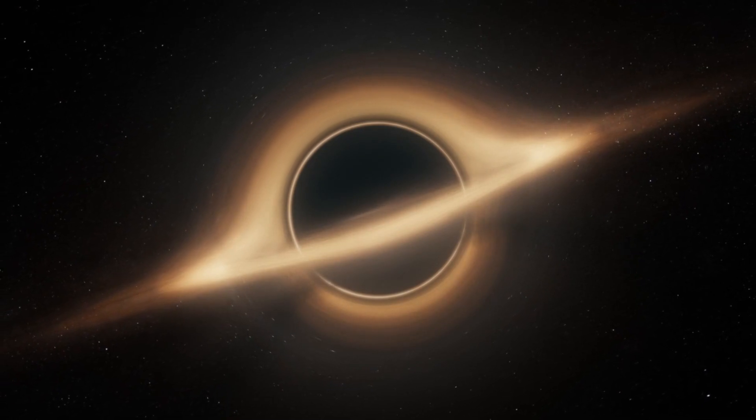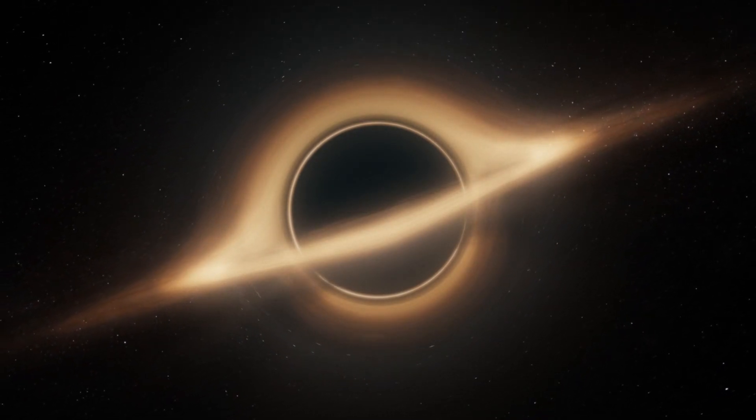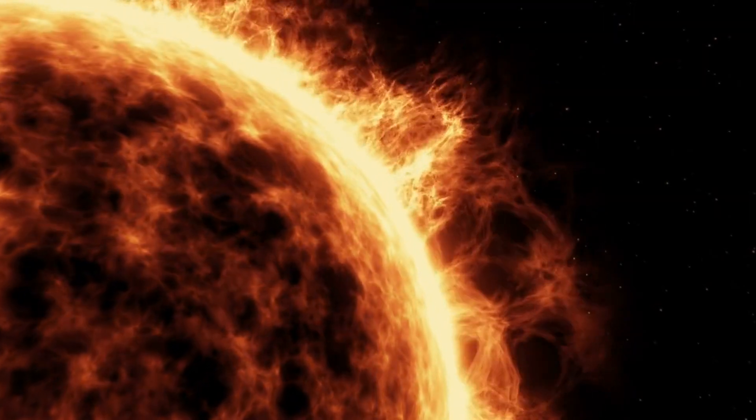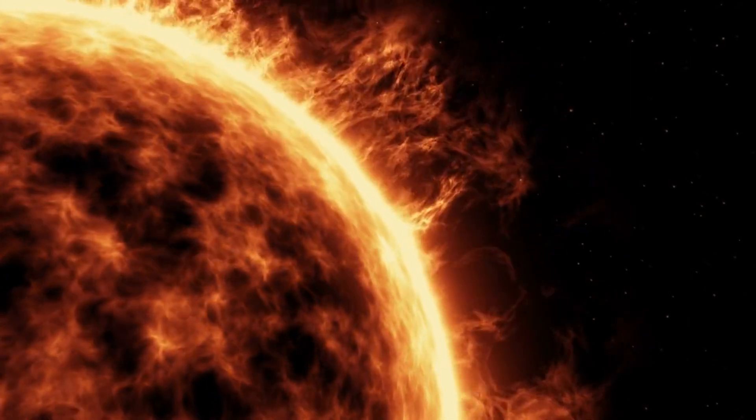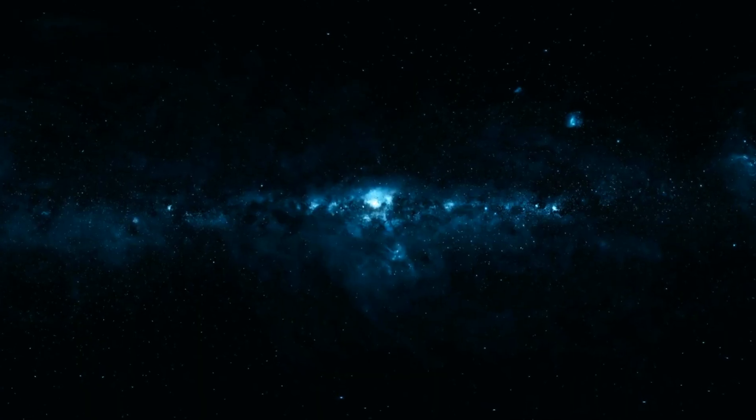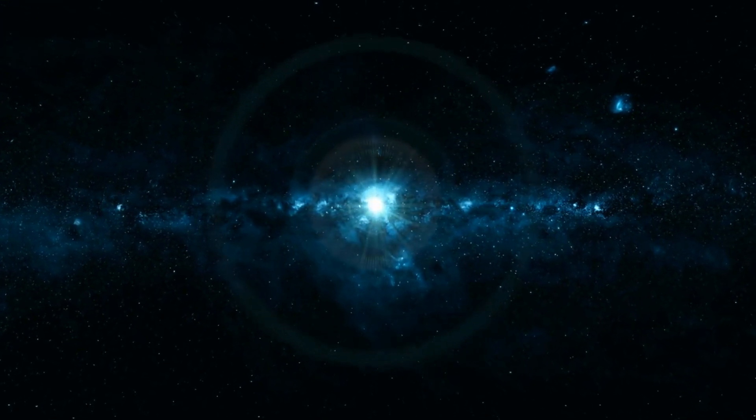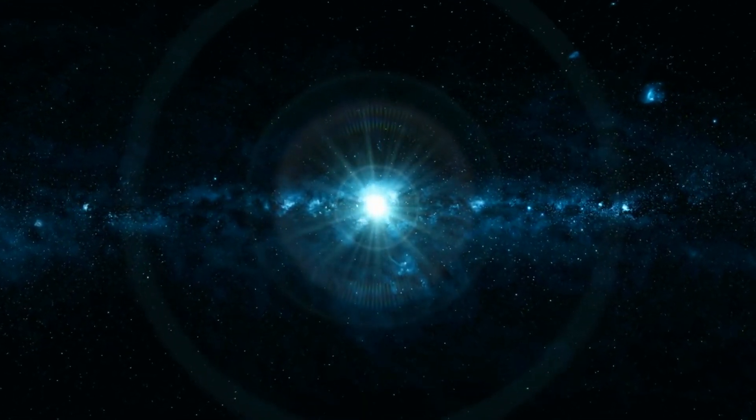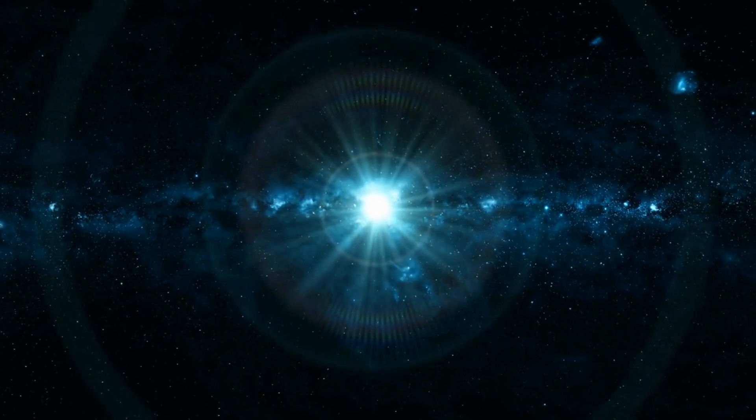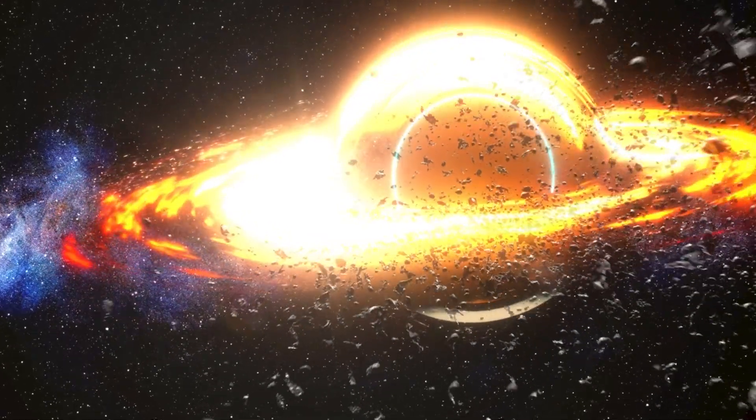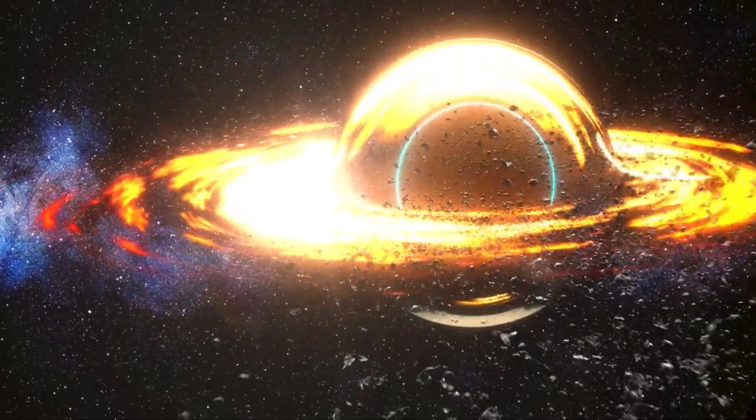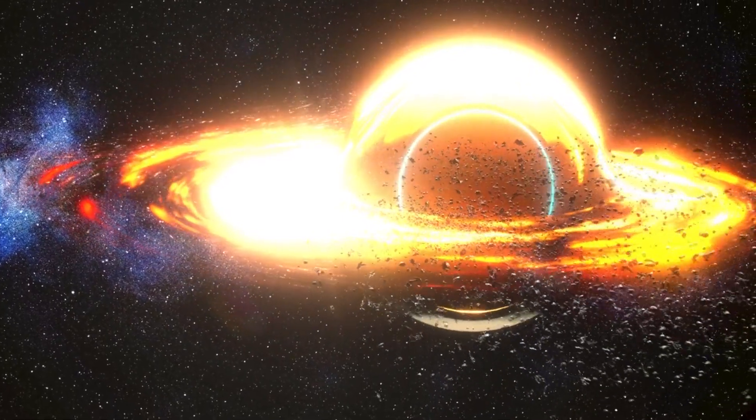The black hole inside TON 618 is truly gargantuan. It's estimated to have a mass of around 66 billion times that of our Sun. To give that some context, it's over 16,000 times the mass of Sagittarius A, the supermassive black hole at the center of our Milky Way galaxy. Due to its immense mass, the black hole in TON 618 is often categorized as an ultra-massive black hole.